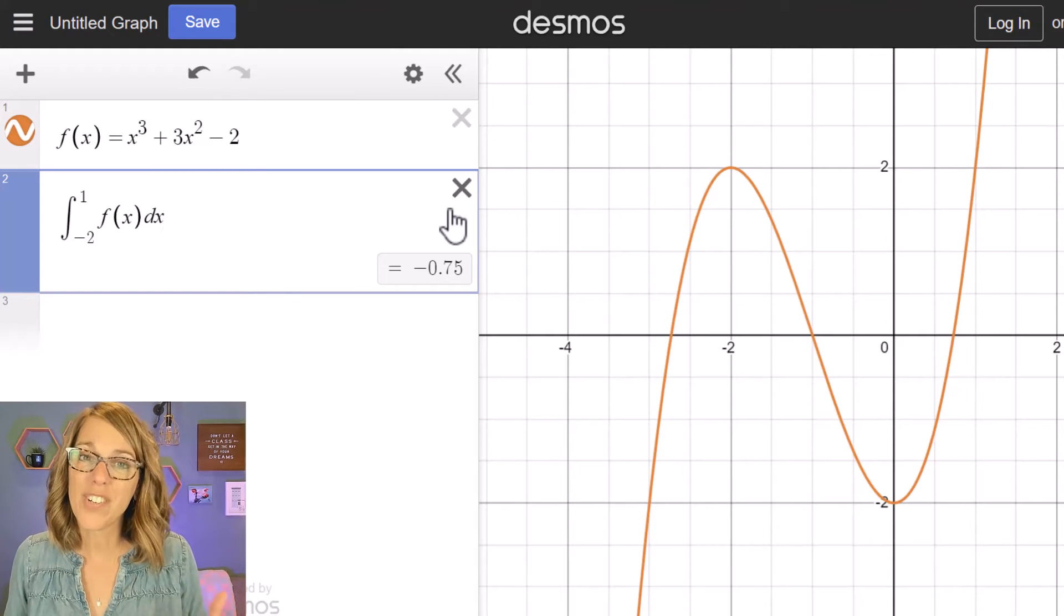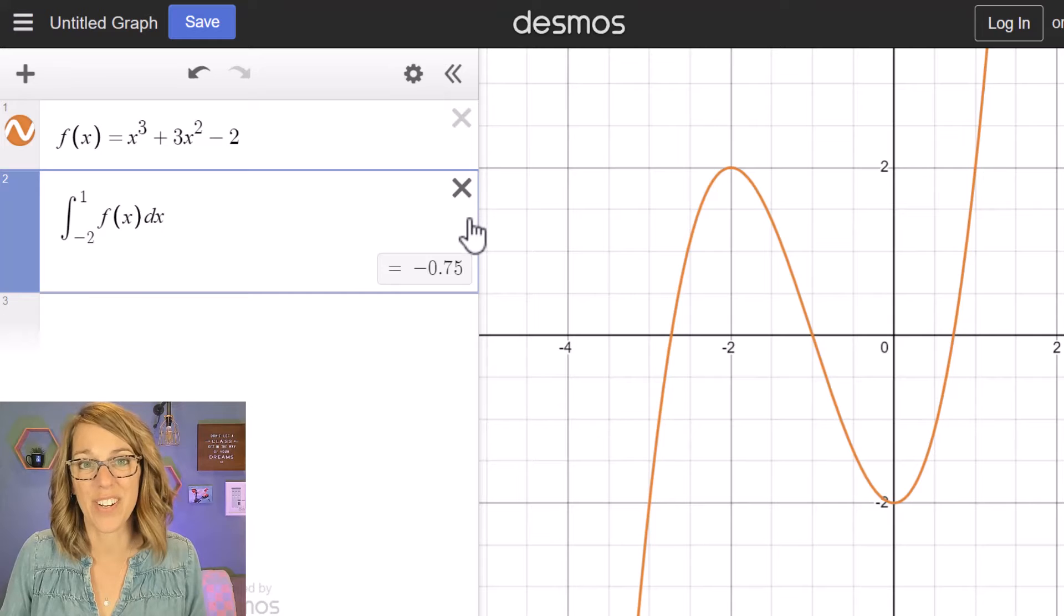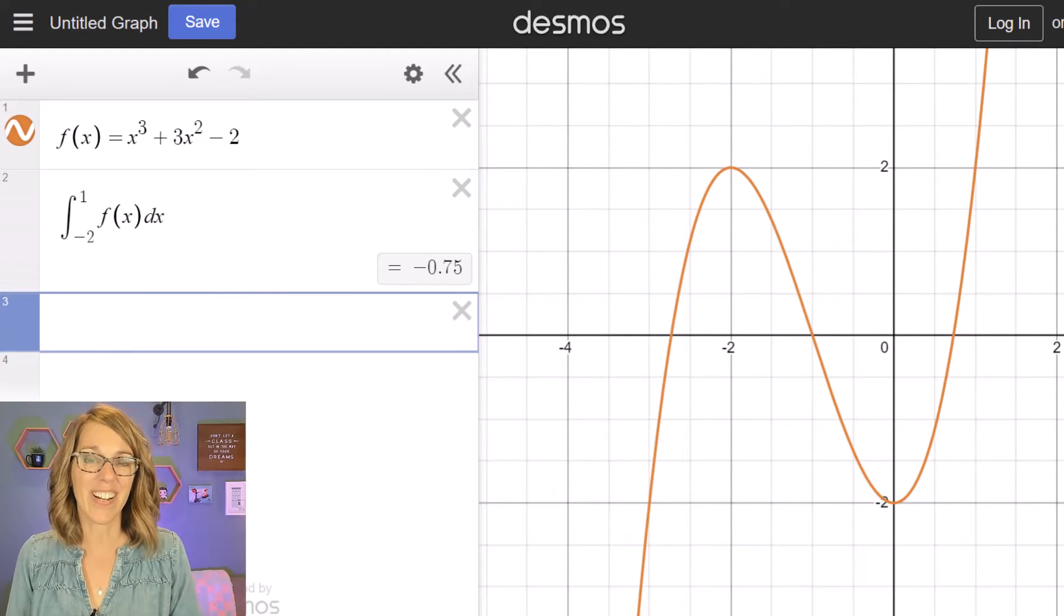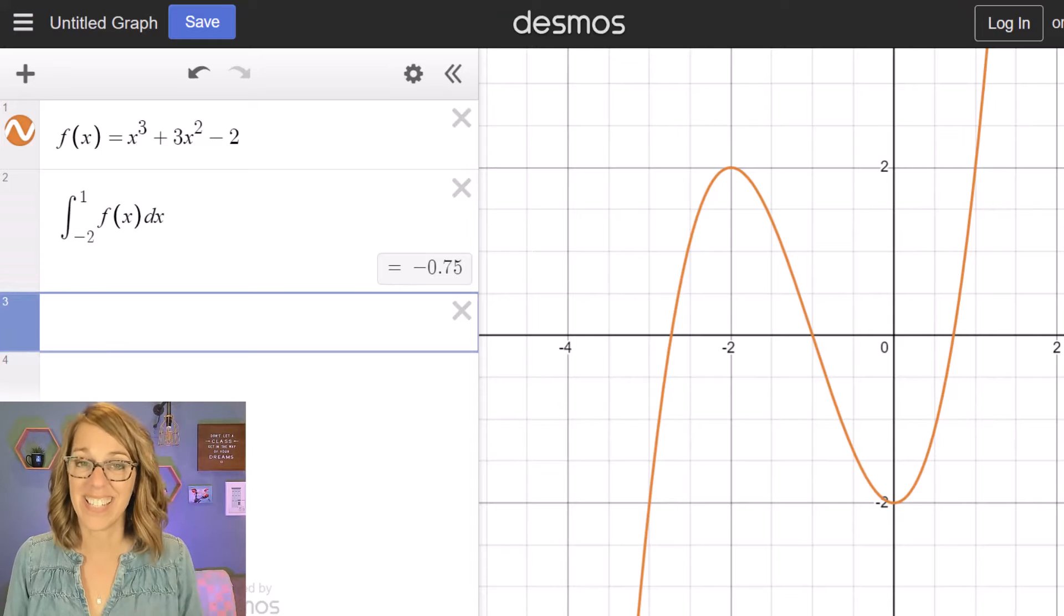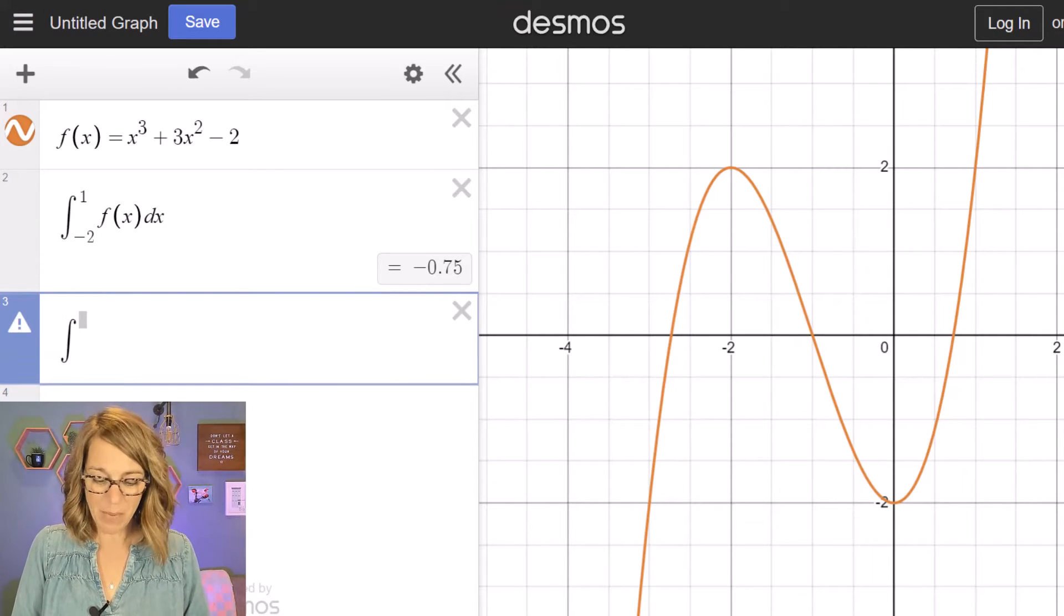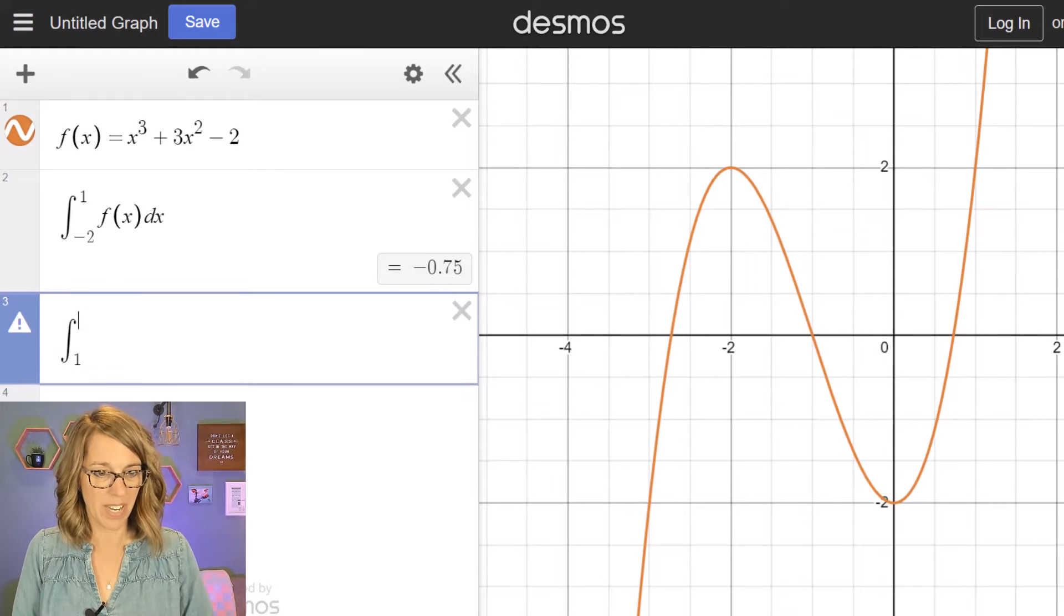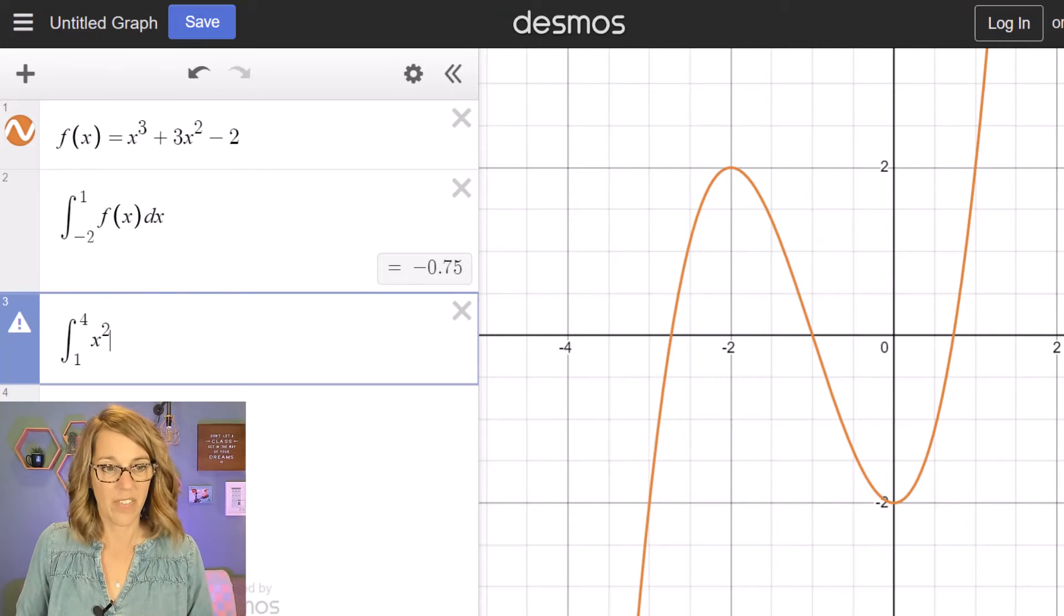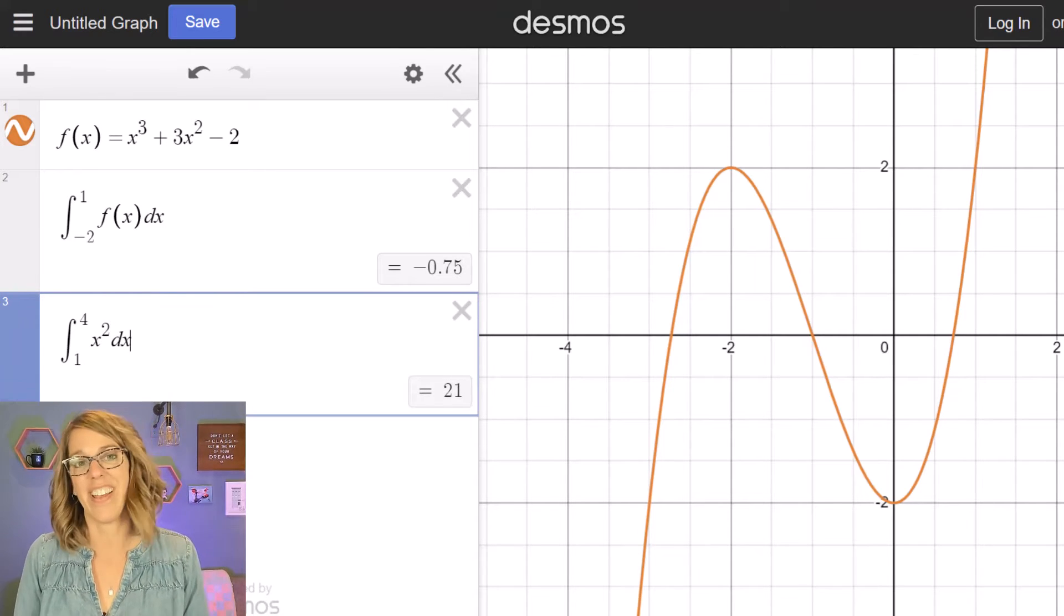We can also type the function directly into our integral. Let's go ahead and grab another empty cell by clicking there, and then I'm going to type I-N-T to get our integral symbol. So I-N-T. This time I want to integrate from 1, and then I'm going to hit tab. Let's say 1 to 4 of I'm going to do x squared and then arrow over and then a dx.